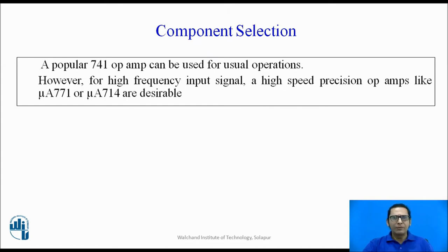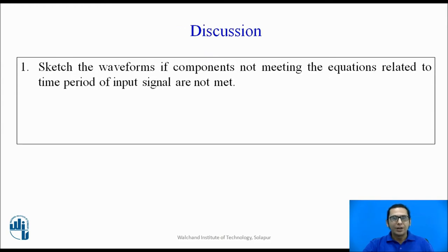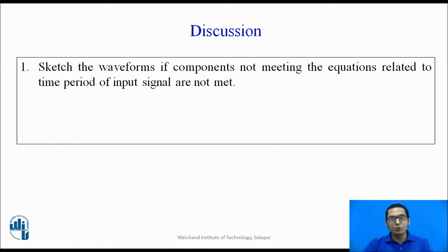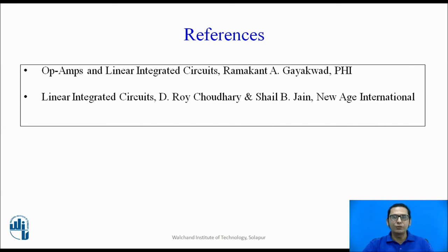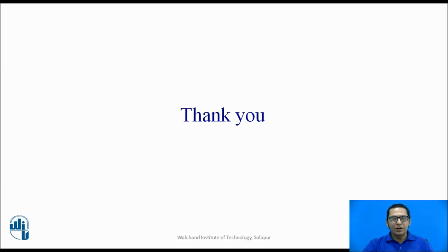A popular op-amp 741 can be used for standard operations. If the input signal frequency is very high, we need to use high-speed precision operational amplifiers like the 771 or 714. As a discussion point, consider what happens to the output waveform if those two RC time constant equations are not satisfied. References for this session include: Operational Amplifier and Linear Integrated Circuit by Ramakant Kaikwar, and Linear Integrated Circuit by Rai Choudhury and Jain. Thank you, students, for your patient listening.